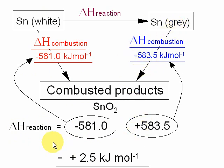So the total calculation is minus 581 plus 583.5, which gives a final answer of plus 2.5 kilojoules per mole. Always put a sign in when you've got enthalpy calculations, even if it's positive.